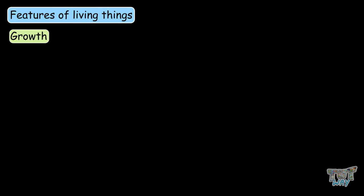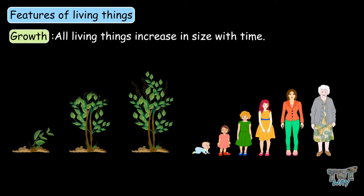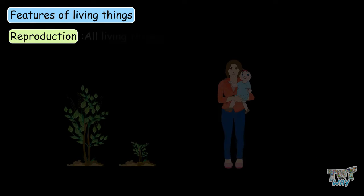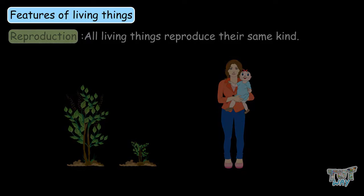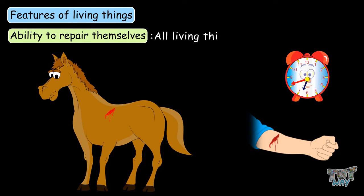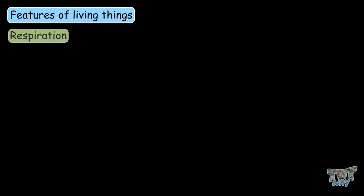Now, let's learn some more features of living things. The first feature is growth — all living things increase in size with time. Next is reproduction — all living things reproduce their same kinds. Next is the ability to repair themselves — all living things are able to repair themselves. Respiration — all living things respire or exchange gases with the environment.